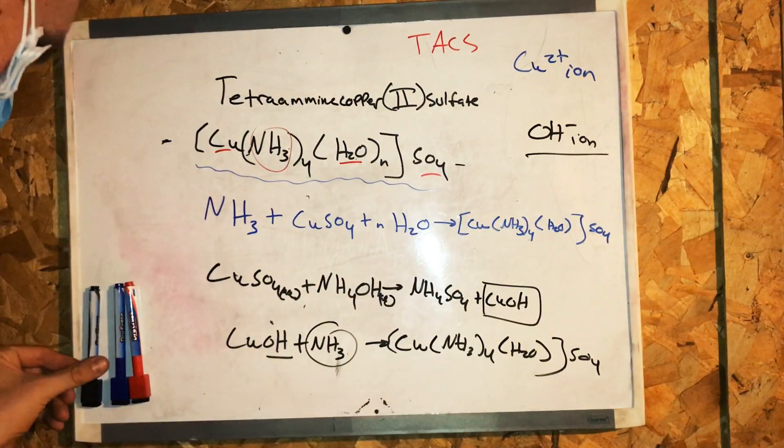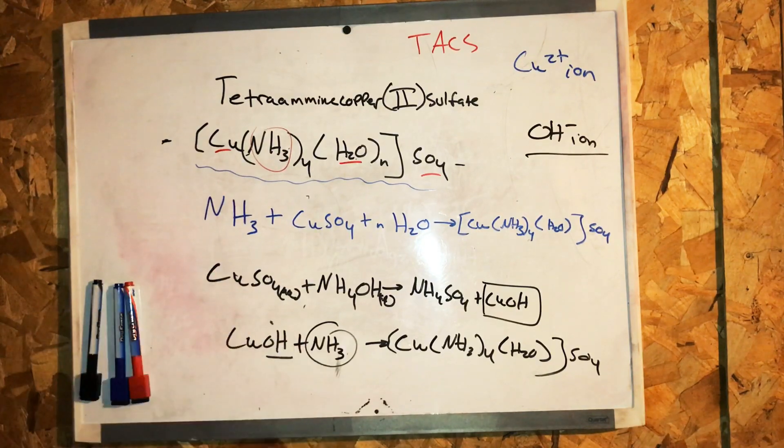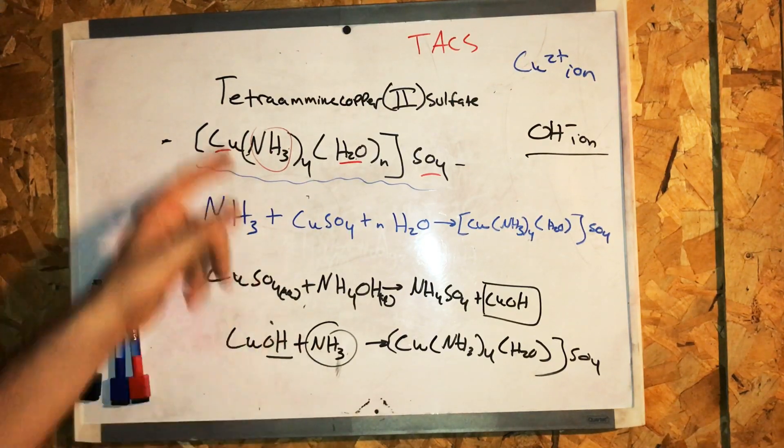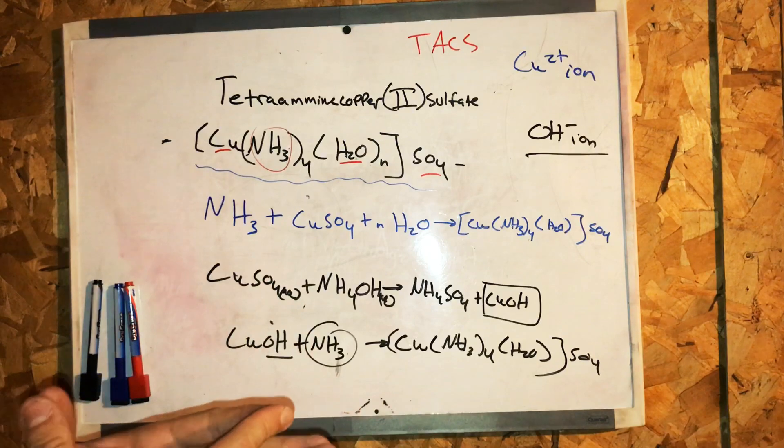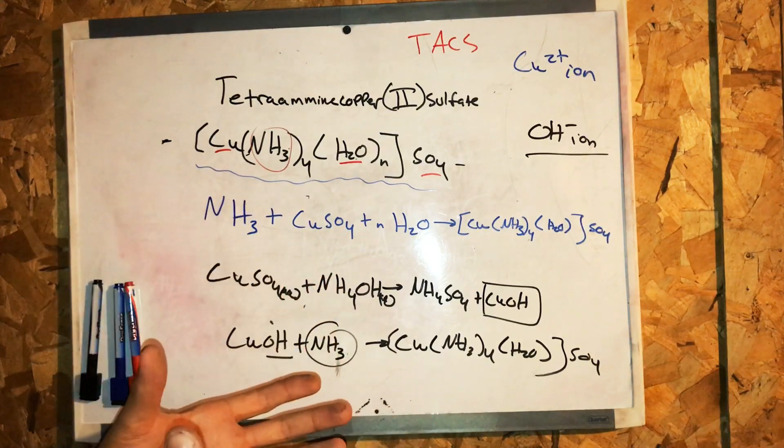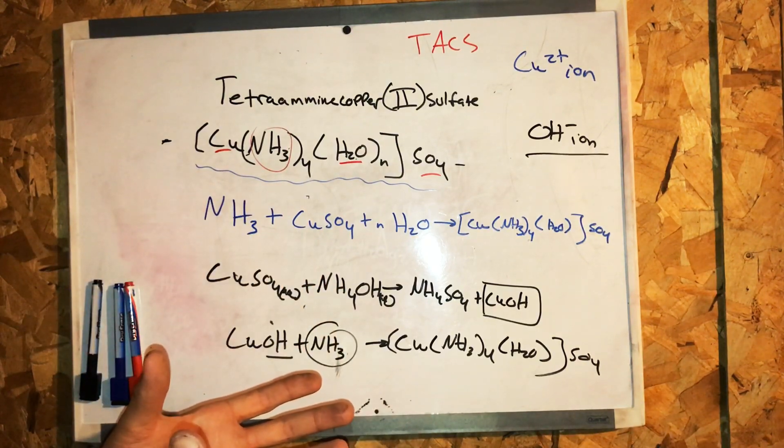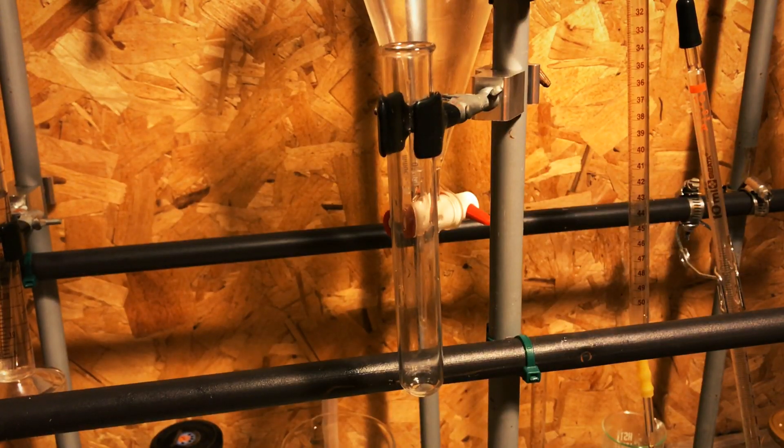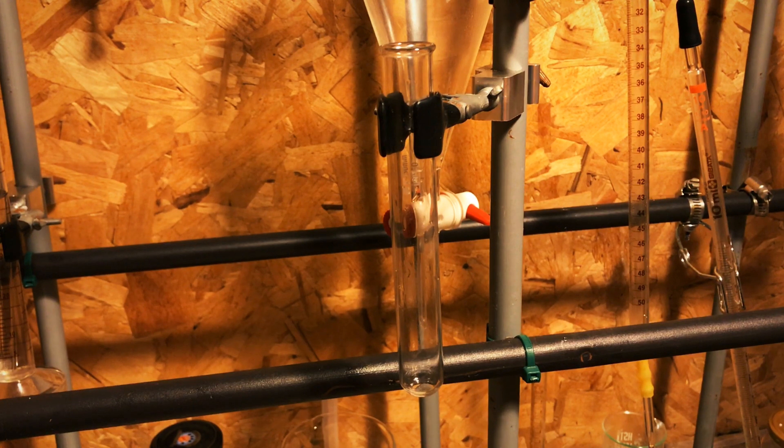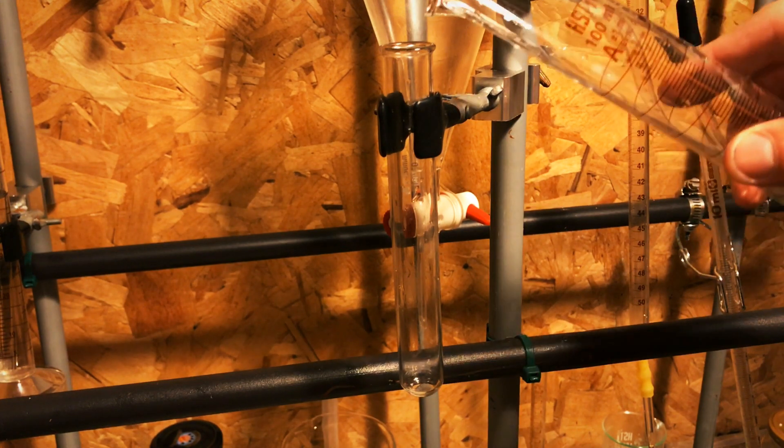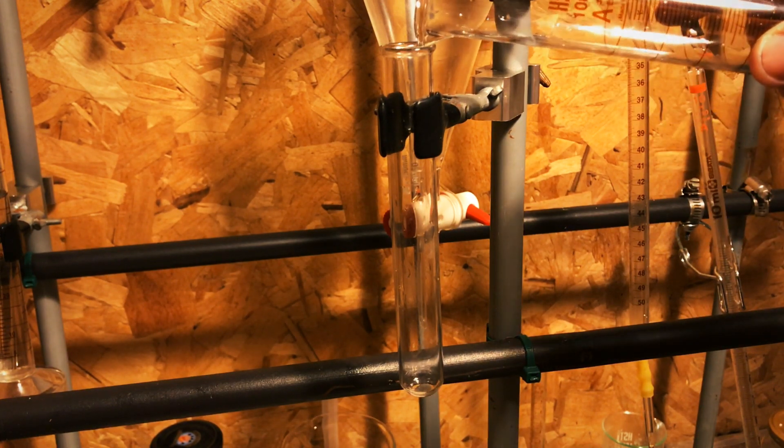Let's head to the laboratory, and let me demonstrate how to create the tetramine copper sulfate molecule. To create the tetramine copper sulfate molecule, I'm first going to add some copper sulfate solution to the test tube.